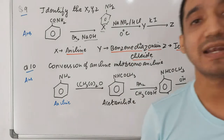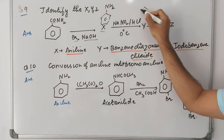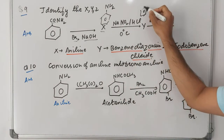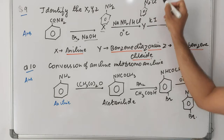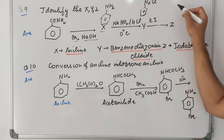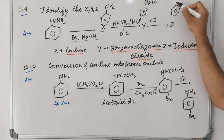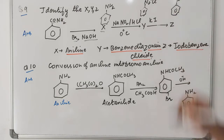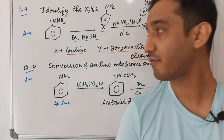Next, aniline is reacted with NaNO₂ and HCl — this is the Sandmeyer reaction. It results in the formation of benzene diazonium chloride (Y). When benzene diazonium chloride is reacted with KI, it results in the formation of iodobenzene (Z).